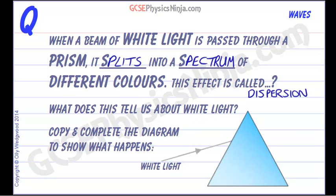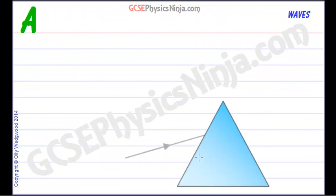Let's complete this diagram to show what's going on. Here's white light and we know that white light is a type of electromagnetic wave. Electromagnetic waves can travel through a vacuum and they can travel through transparent materials such as glass or plastic.